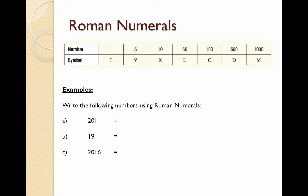Okay, let's have a look at some examples. We're going to start off with A which is 201. We start with CC which is two 100s and a single I for the 1. Pretty simple.